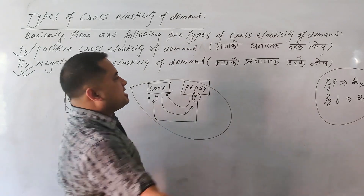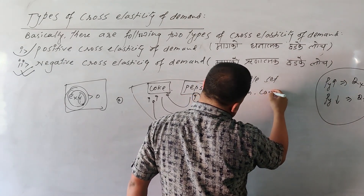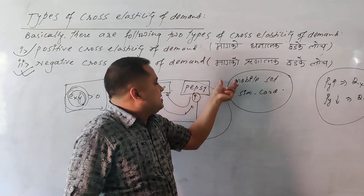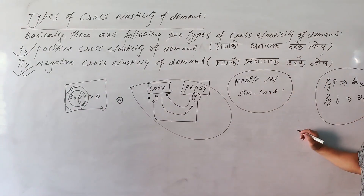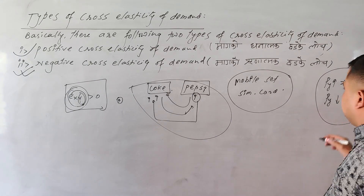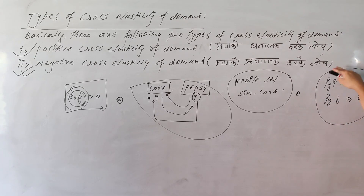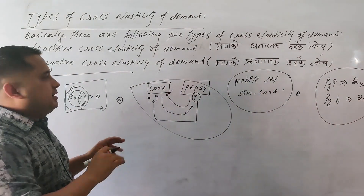Negative cross elasticity of demand applies to complementary goods. The best example is a mobile set and SIM cards — a SIM card cannot satisfy particular human wants without a mobile set. So in the case of complementary goods, there exists negative cross elasticity of demand.